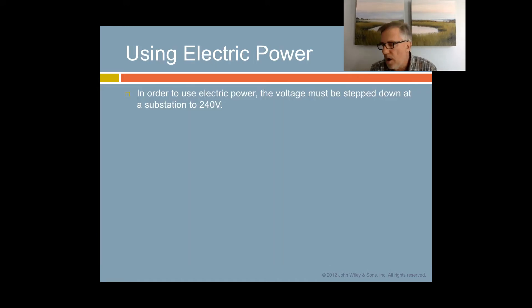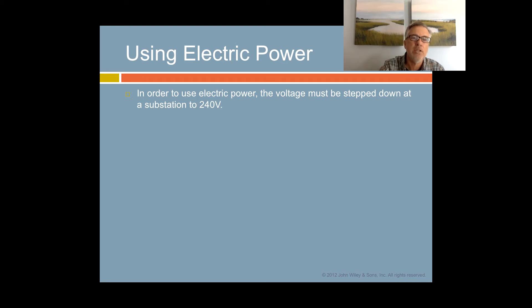When it comes time for us to use electric power, the voltage must be stepped down to a reasonable voltage that won't kill you if you get accidentally shocked. Normally it's stepped down to about 240 volts, and that is usually the service line coming into your house. You may have a few appliances that use 240 volts, such as some air conditioning units and refrigerators. But most of your appliances are running at about 110, 120 volts, which is coming out of the wall socket in your house.